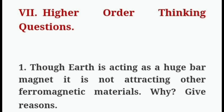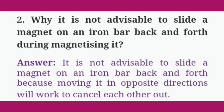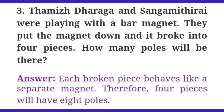Roman numeral VII — higher order thinking questions. First question: though Earth is acting as a huge bar magnet, it is not attracting other ferromagnetic materials. Why? Give reasons. Answer: Earth is not attracting other ferromagnetic materials because the magnetic character of ferromagnetic material is affected by external temperature. When they are heated, they become paramagnetic at Curie temperature. Second question: why is it not advisable to slide a magnet on an iron nail back and forth during magnetizing it? Answer: it is not advisable because moving it in opposite directions will cancel each other out.